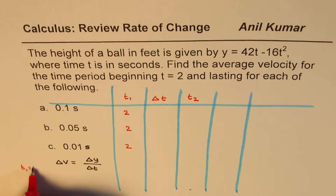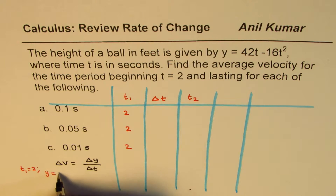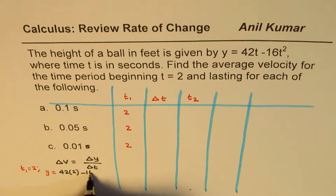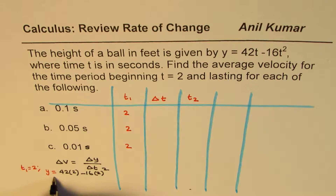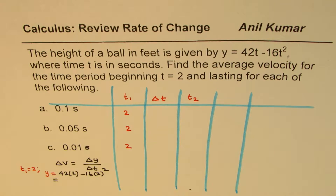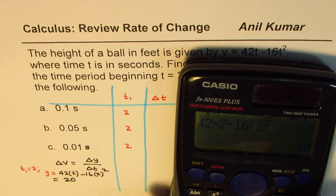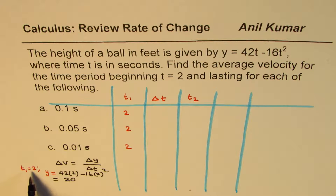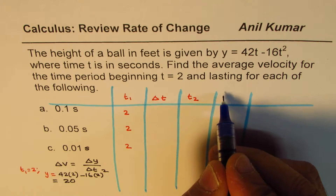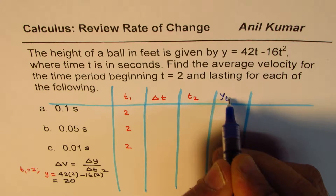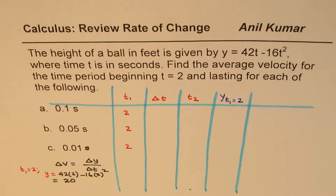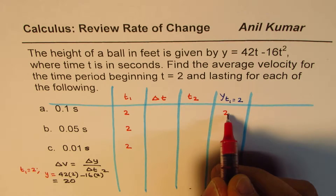For t1 equals 2, we calculate y. Substituting into the formula: y equals 42 times 2 minus 16 times 2 squared. Using a calculator: 42 times 2 minus 16 times 4 gives us 20. So the distance at t1 equals 2 is 20. We can write y equals 20 for each row in our table.